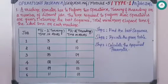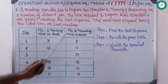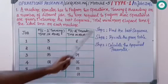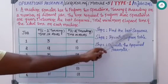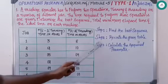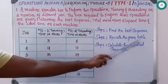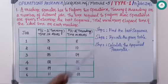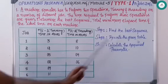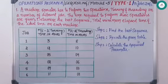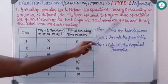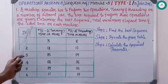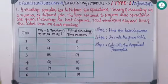Coming to the solution: in order to solve this problem you need to remember three steps. The first step is to find out the best sequence. The second step is to rewrite the given table for the best sequence obtained. The third step is to calculate the required parameters — here, the total minimum elapsed time as well as the idle time on each machine.